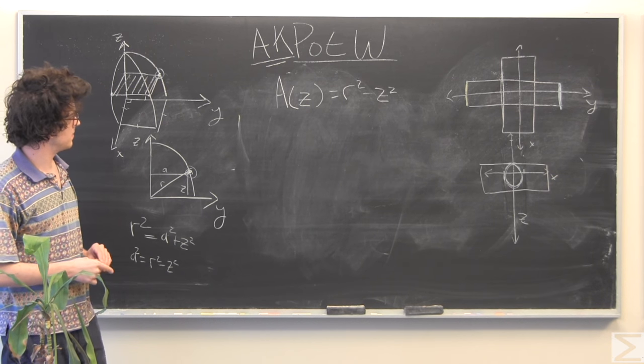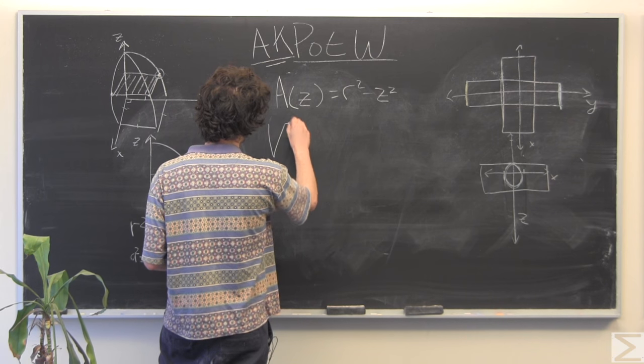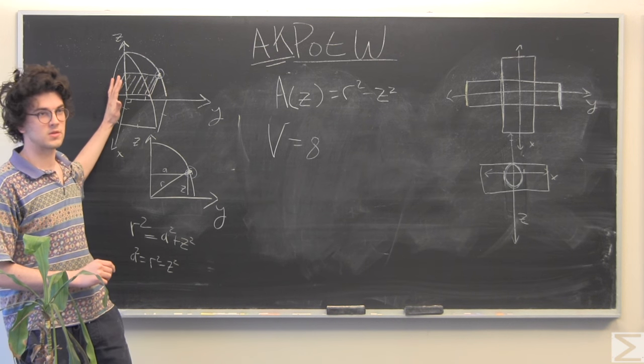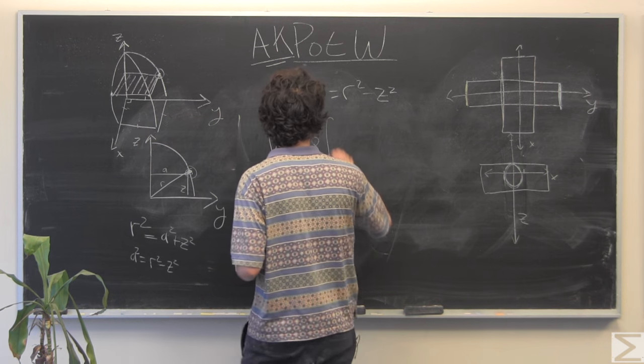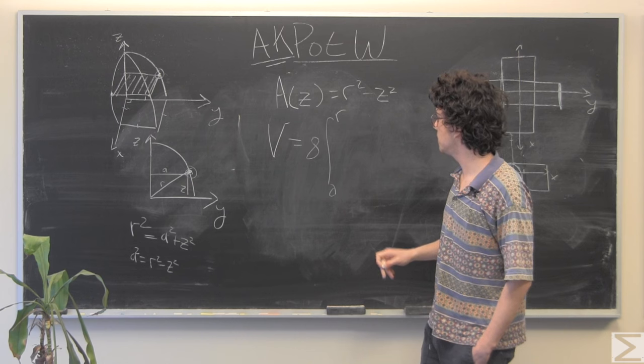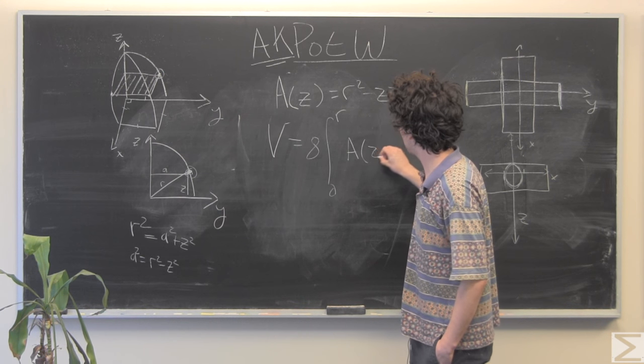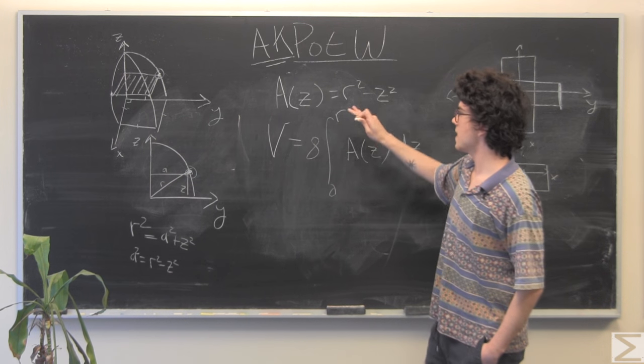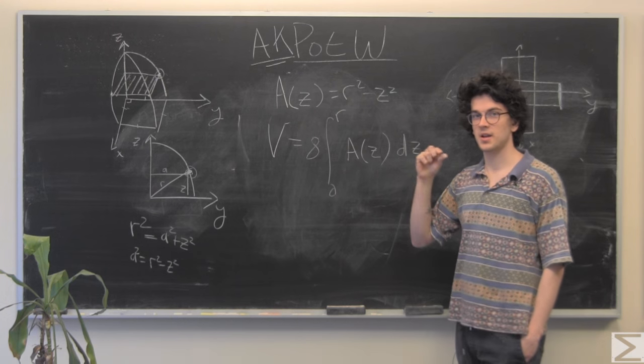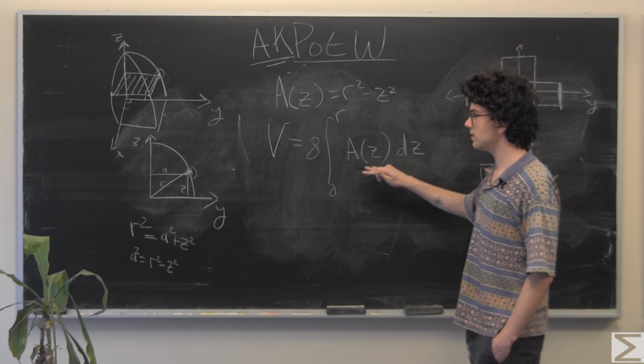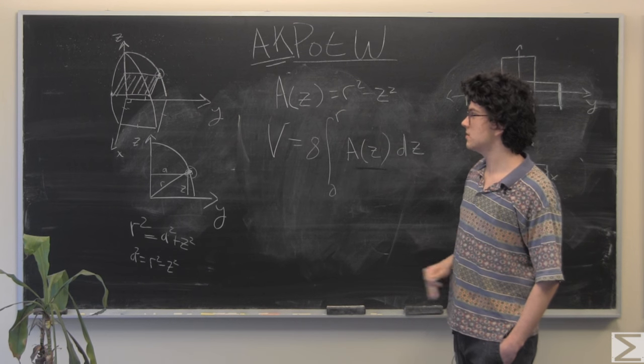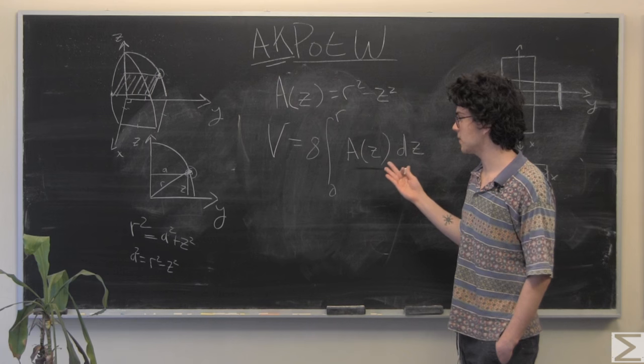So now what we're going to do is just set up an integral. Volume, and keep in mind we're looking for 8 times whatever the volume of this solid is. So 8 times, and we're sliding up the z-axis from 0 to r of our area times a little change in z, which is going to act as our height. So this would be like area times height is the volume of the cylinder. We're adding up constantly over this whole solid.